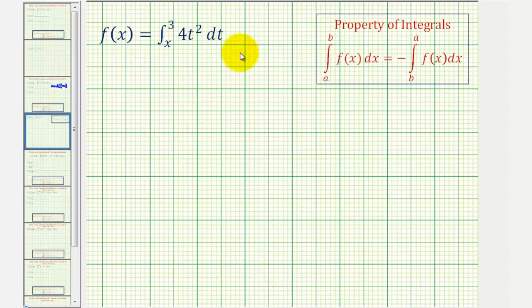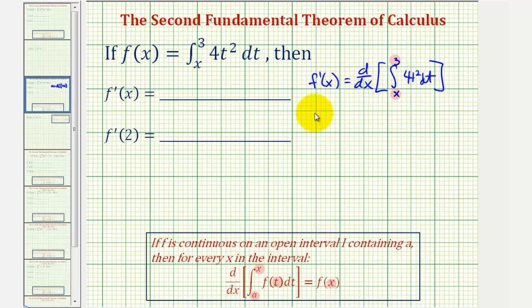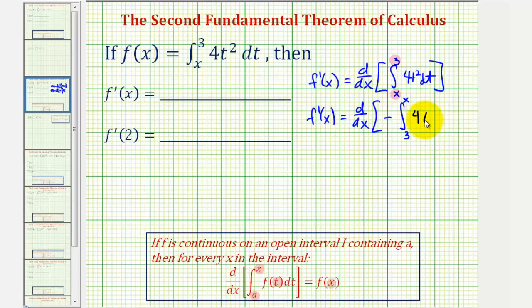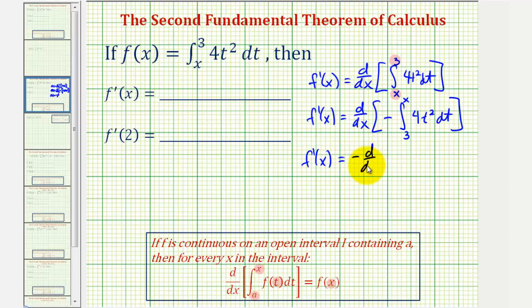We need to change the order of integration before applying the theorem. Remember, the integral from a to b equals the opposite of the integral from b to a. So we rewrite this as f prime of x equals the derivative with respect to x of the opposite of the integral from three to x of four t squared. We can factor the negative out and write f prime of x equals the opposite of the derivative with respect to x of the integral from three to x of four t squared dt.